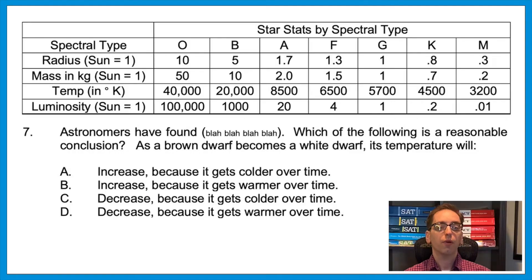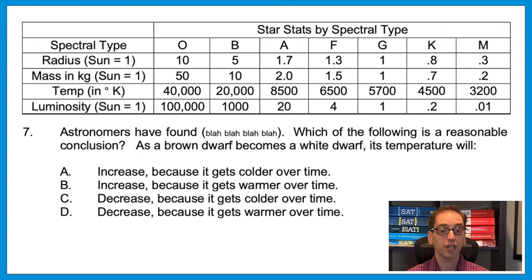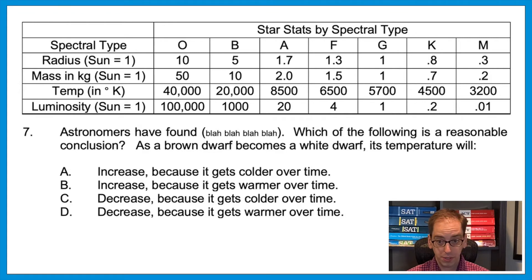Now don't answer the next question — just think about which two choices would definitely be wrong. Question seven: Astronomers have found [blah blah blah]. Which of the following is a reasonable conclusion? As a brown dwarf becomes a white dwarf, its temperature will: increase because it gets colder, increase because it gets warmer, decrease because it gets colder, or decrease because it gets warmer. Answers A and D are counterintuitive — temperature can't increase because it gets colder, or decrease because it gets warmer. So even without seeing the passage, you know A and D are out. You're down to B and C.